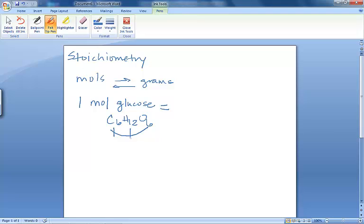12 times 1 for hydrogen, that's 12. And 6 times 16 for oxygen, that's 96. And I would get a total of 180 grams. What that's essentially telling me is that every 180 grams of glucose is equal to one mole of glucose.